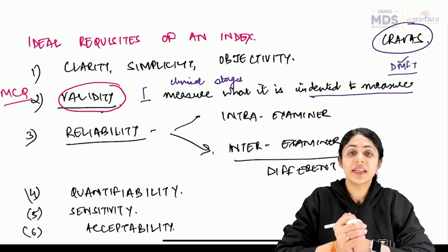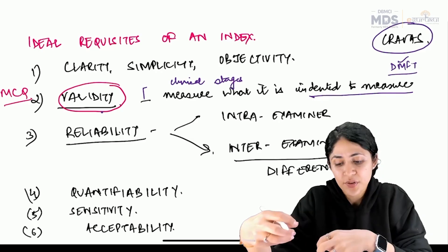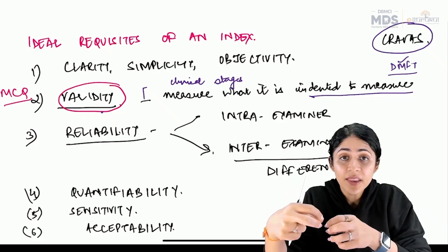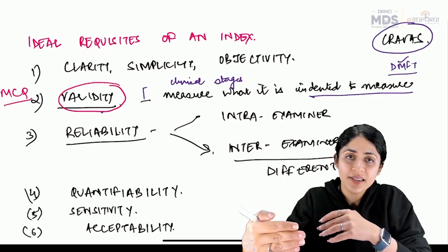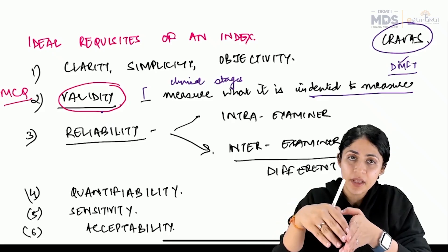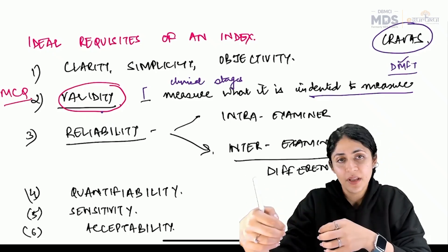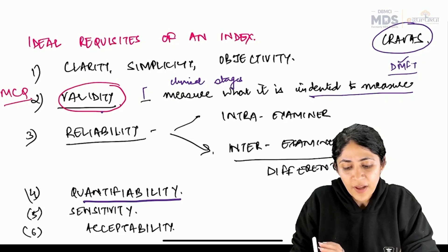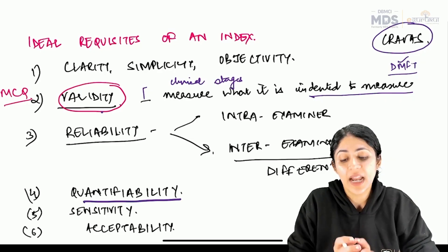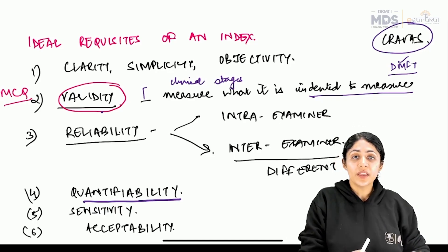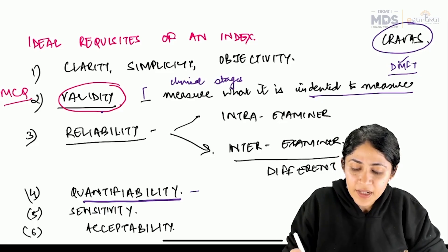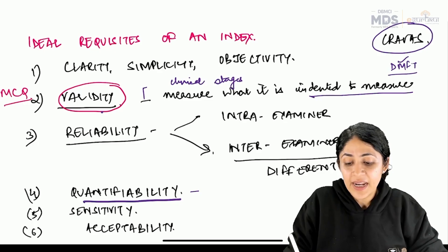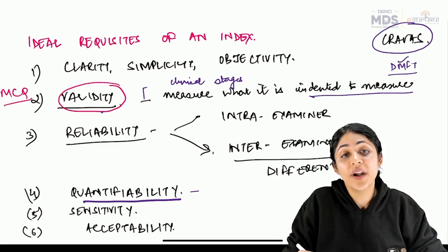Reliability — the other word for reliability is reproducibility. If the same person is measuring at different time intervals and the results are consistent, that is intra-examiner reliability. If different examiners are measuring at the same time and results are consistent, that is inter-examiner reliability. The results should be reproducible. Quantifiability means that results should be amenable to statistical analysis — they should be kept in numerical form and easily analyzed.